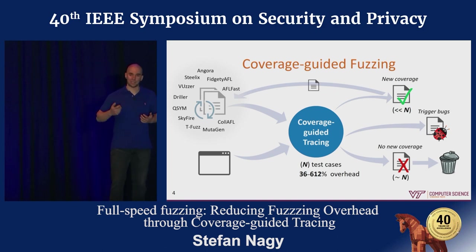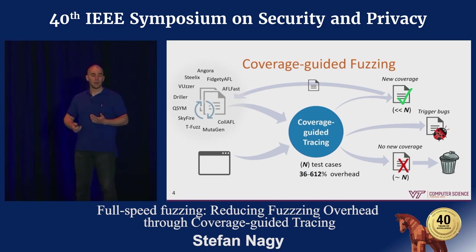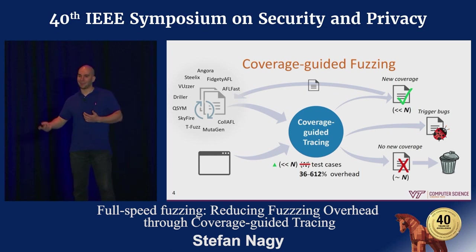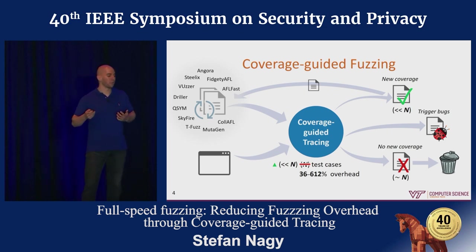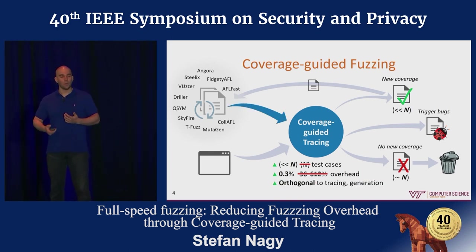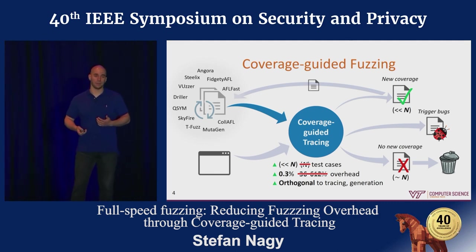This is where coverage-guided tracing fits in. Rather than tracing every single test case to find the few that are coverage-increasing, we restrict tracing to just those that are coverage-increasing — that small fraction. As a result, we were able to dramatically cut down overall overhead to about three-tenths of a percent. And because we focus on simply filtering out test cases before they are traced, we easily complement approaches which try to generate test cases better or make tracing faster by other means.